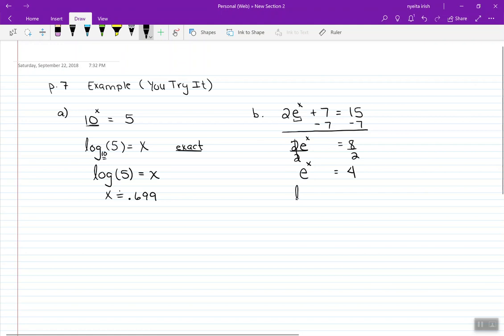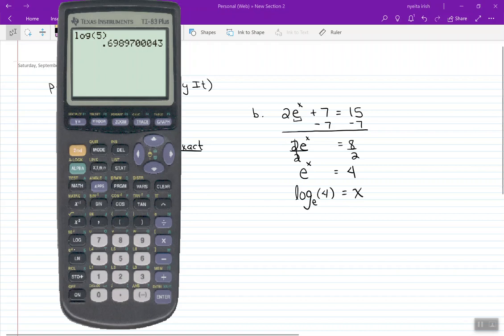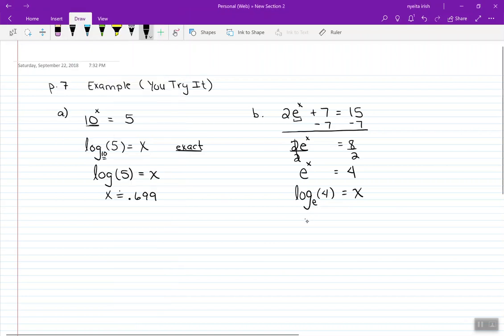I'm going to start out with log base e. Log base e, we have another name for that. If you take a look at your calculator, where I see e to the x, the logarithm that I'm dealing with is ln, or natural log. So instead of saying log base e, I'm just going to call it natural log of 4 equals x. This is my exact answer.